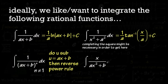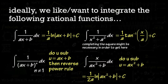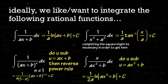Another variation is when we have an x on top over ax squared plus b. Just do u-sub, let u equal the bottom, and you end up with a natural log situation because of the x on top. So these are the four types of integrals with rational functions that we really want to integrate.